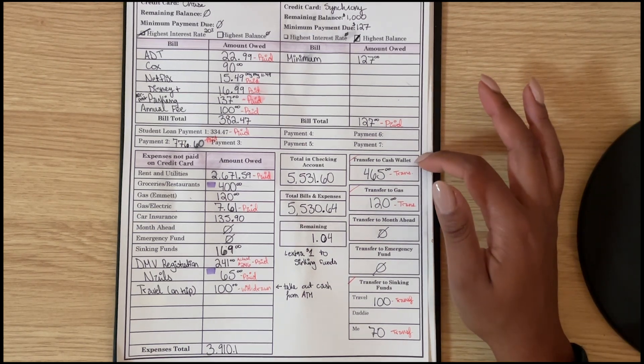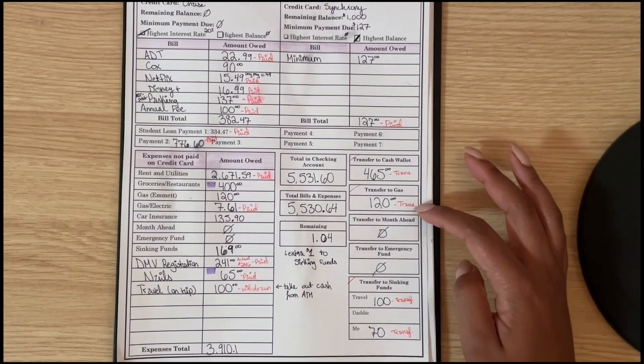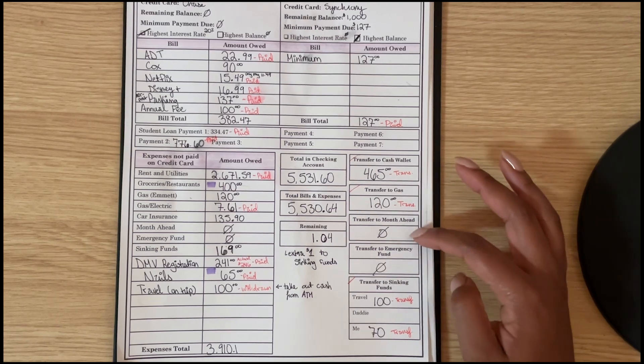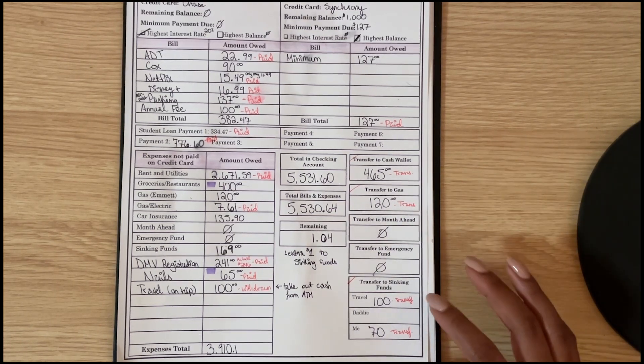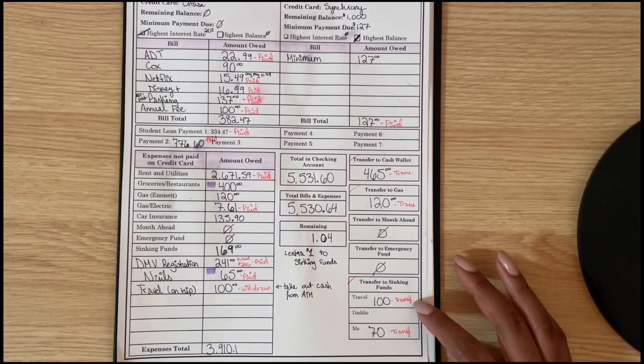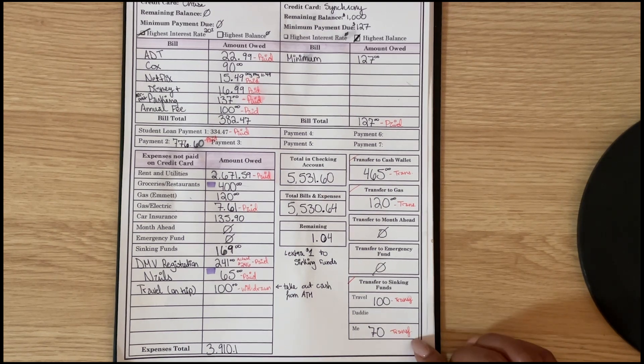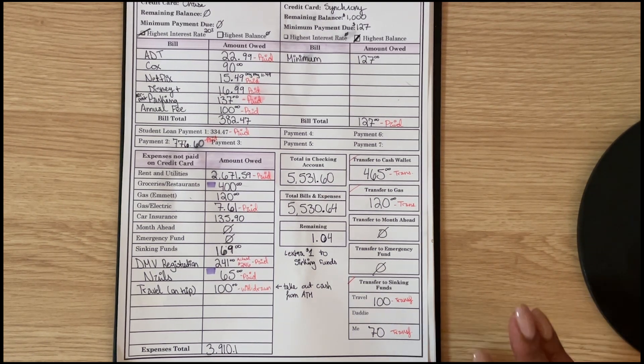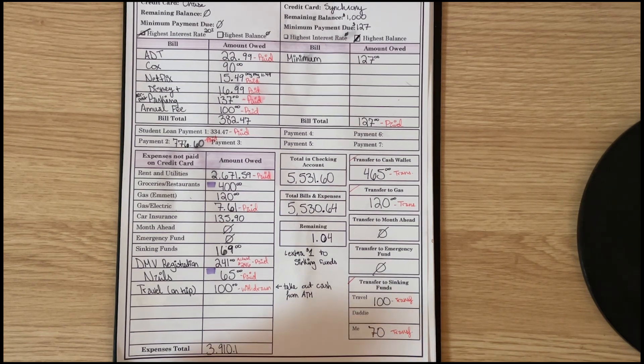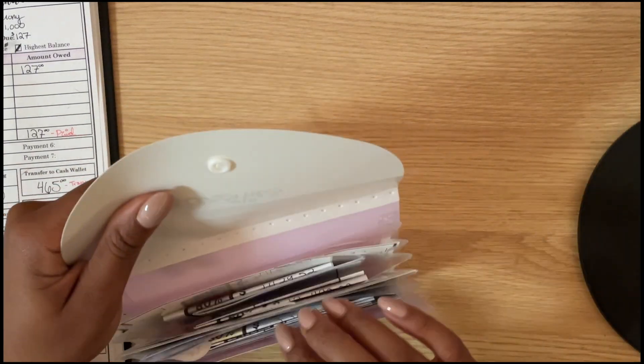Transferred $465 to my cash wallet, transferred $120 to gas. Like I said, nothing in month ahead, nothing in emergency. $100 of those dollars went to - $100 of the sinking fund dollars went to travel for Disneyland, and $70 of those dollars went to my Me Fund for getting my eyebrows microbladed in the summer.